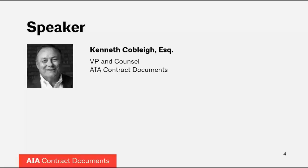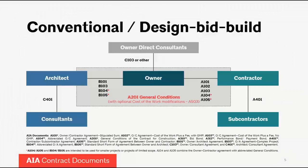My name is Ken Cobley. I'm the vice president and counsel for the AIA contract documents program. I've been with the program a little over 14 years and I oversee the group that writes and publishes the AIA contract documents. Prior to that, I spent 14 or 15 years in private practice in small to mid-sized firms in the Baltimore-Washington area, focused mostly on construction litigation.